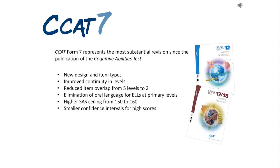CCAT 7 has been available in Canada since the 1960s and has been sold by Nelson the entire time. CCAT is the Canadian Cognitive Abilities Test. It is a Canadian adaptation of COGAT, the Cognitive Abilities Test, published by Riverside Insights. CCAT 7 is the latest edition, complete with new design and updated items.